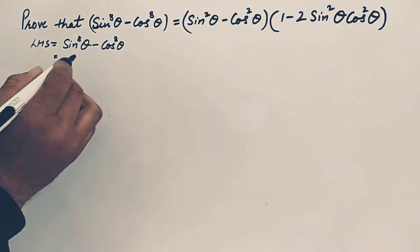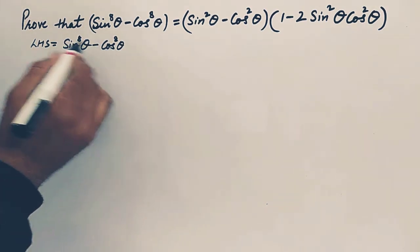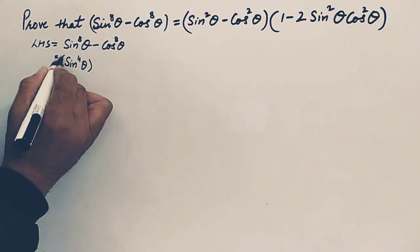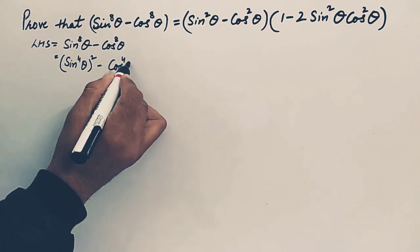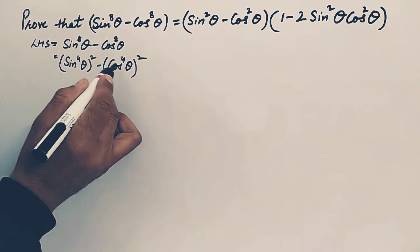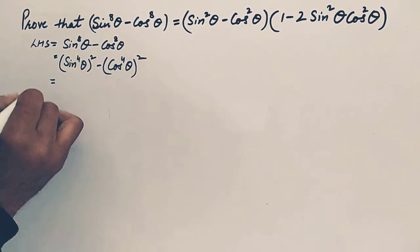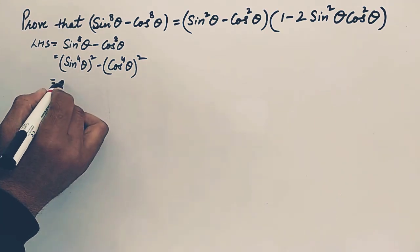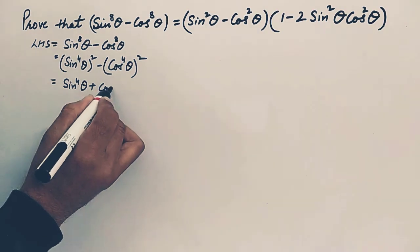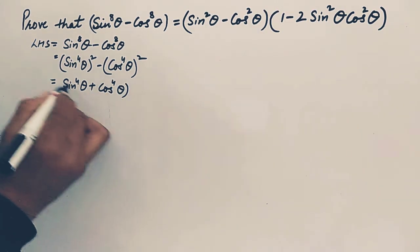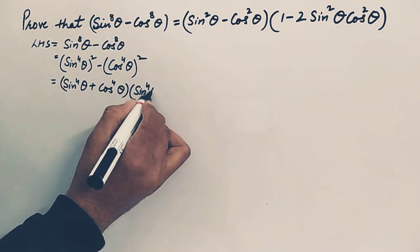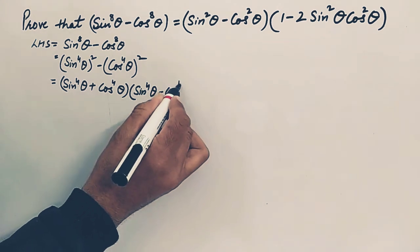Now we'll break this in the form of a² minus b². So it can be written as (sin⁴θ)² minus (cos⁴θ)². This is a² minus b², so the answer is (a + b)(a - b). It will become sin⁴θ plus cos⁴θ, into sin⁴θ minus cos⁴θ.